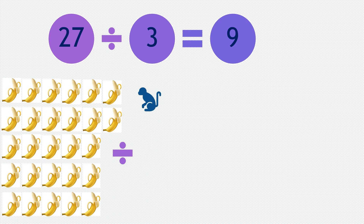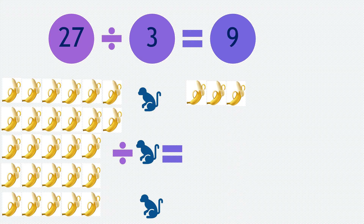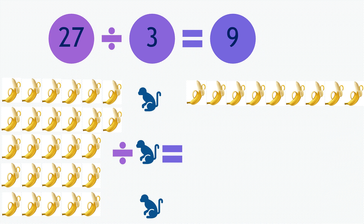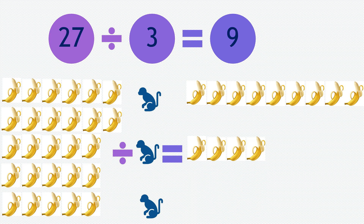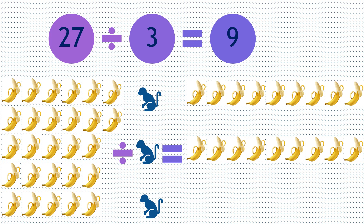So if you divide them by 3 monkeys, each monkey will receive 9 bananas: 1, 2, 3, 4, 5, 6, 7, 8, 9. And next monkey: 1, 2, 3, 4, 5, 6, 7, 8, and 9.